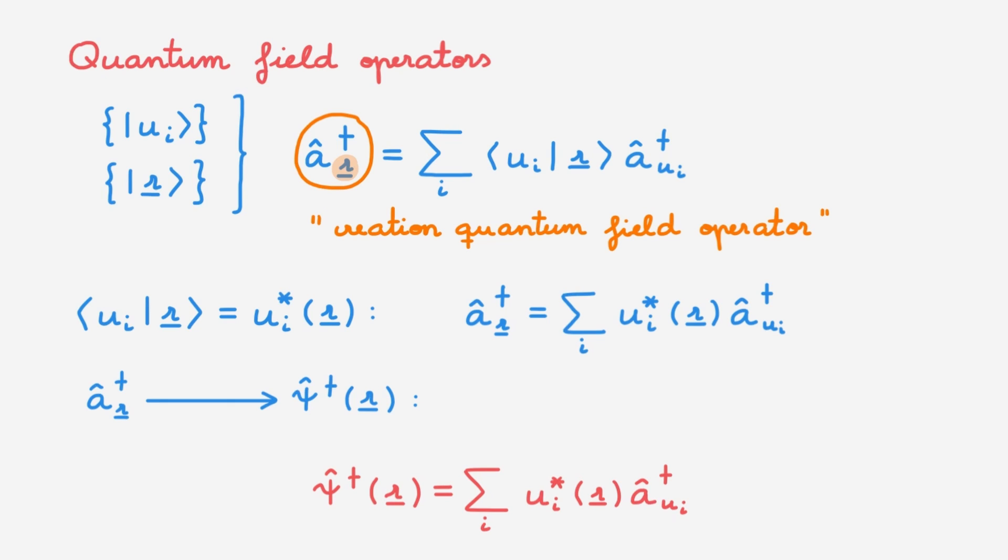Why do we use the notation psi for field operators? In the position representation, quantum states are given by wave functions, which we typically represent by the symbol psi. By analogy, we typically use the same symbol for the creation and annihilation operators associated with the position representation. Of course, you should not confuse this psi here, which is an operator, with the psi used to describe a wave function, which is not an operator.